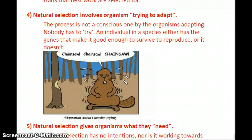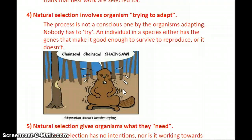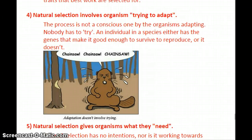Another misconception is that natural selection involves organisms trying to adapt. Natural selection is not a conscious process at all — no organism is trying to adapt. An individual in a species either has the genes that make it good enough to pass on its genes and survive, and the next generation inherits those genes, or it doesn't. It's not something it can consciously choose.